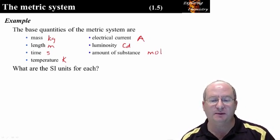The ones that are commonly used in chemistry are mass, length, time, temperature, and amount of substance.